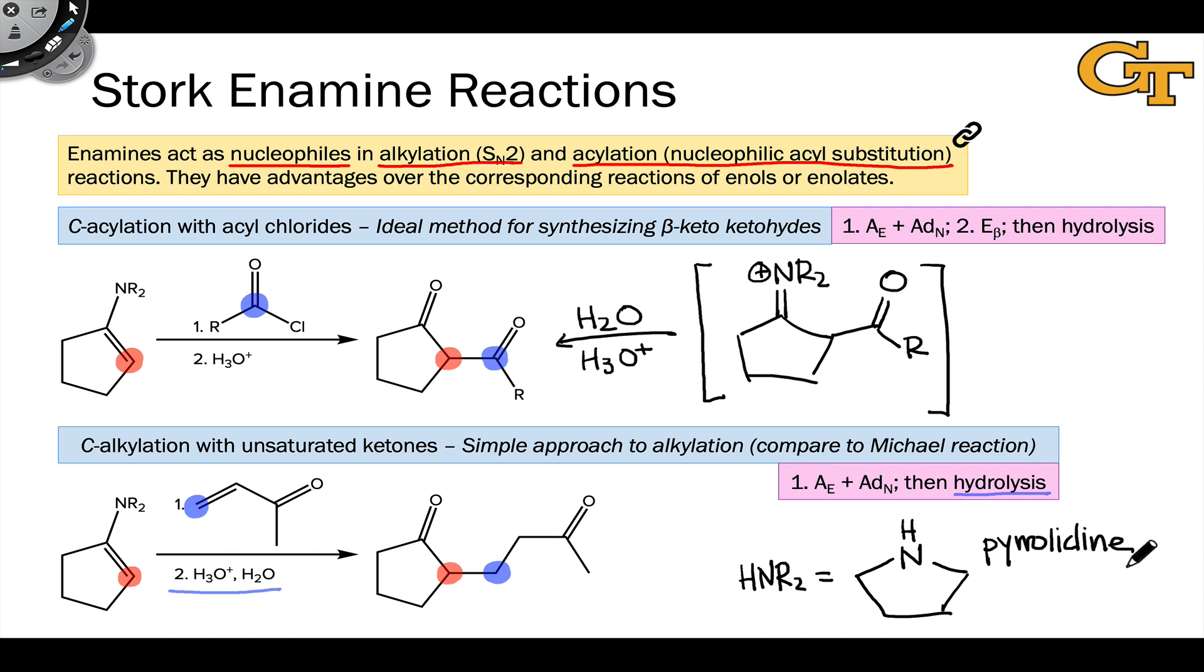This is a five-membered ring, a cyclic amine containing a nitrogen and four carbons that are all saturated. This is called pyrrolidine.